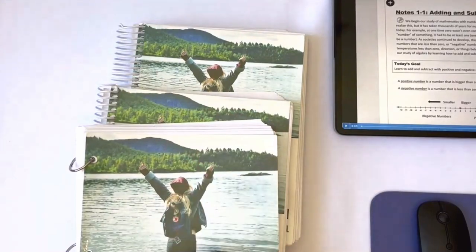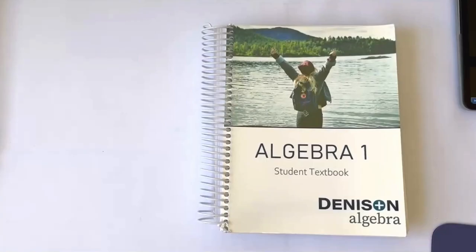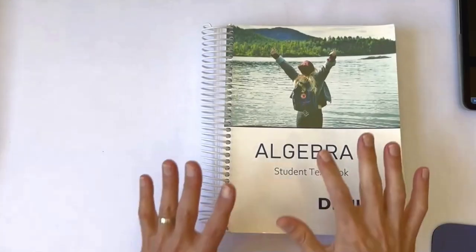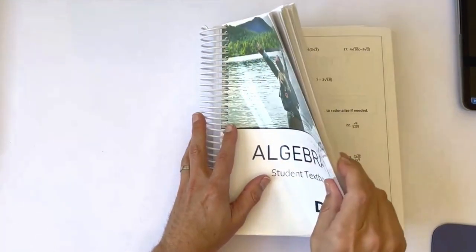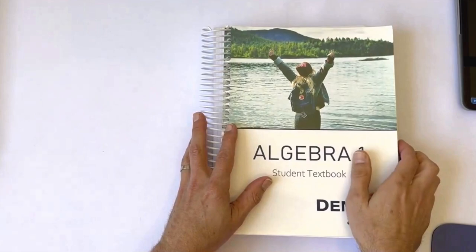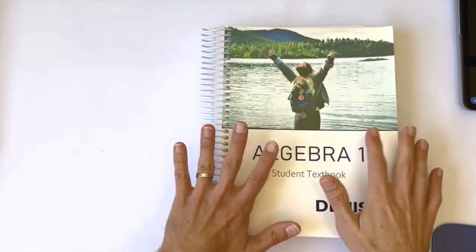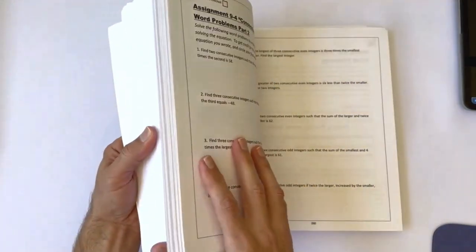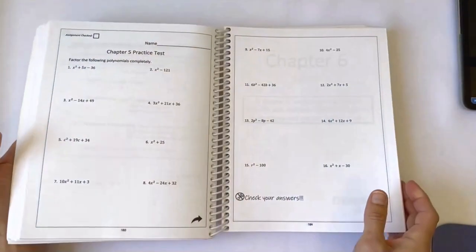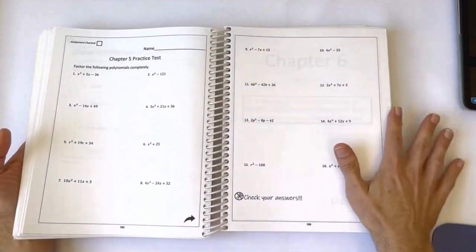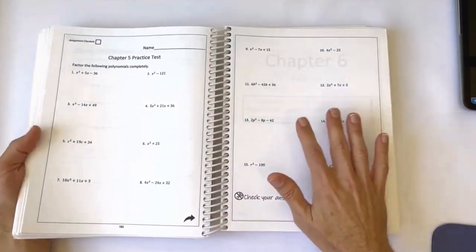So let's start with the student textbook. The student textbook is bound and consumable so nothing gets lost. Students don't have to worry about keeping up with their work and students have everything together so they can easily flip back and look at previous work if they need to. It's consumable so students don't have to copy problems onto separate sheets of paper and keep up with loose paper.